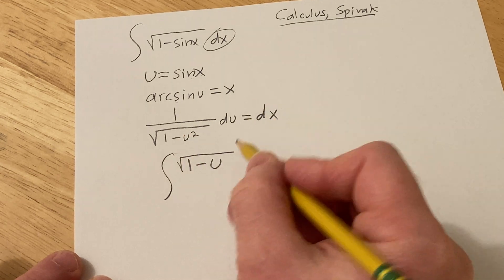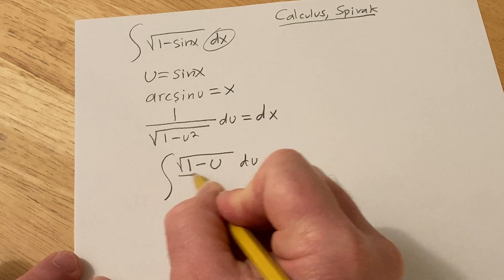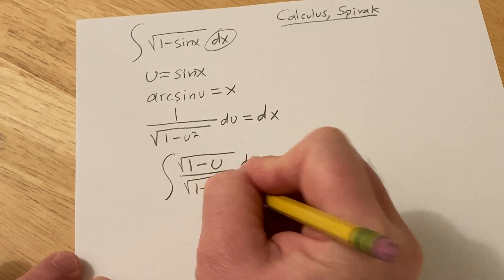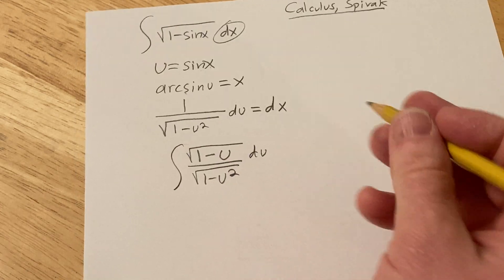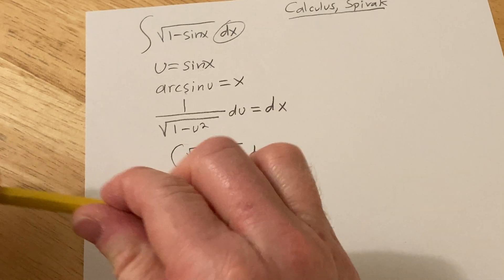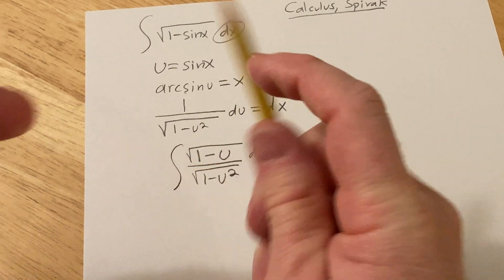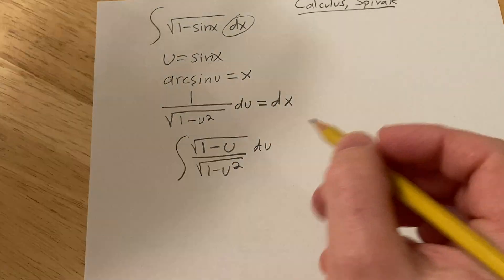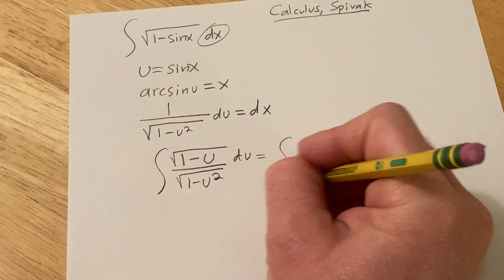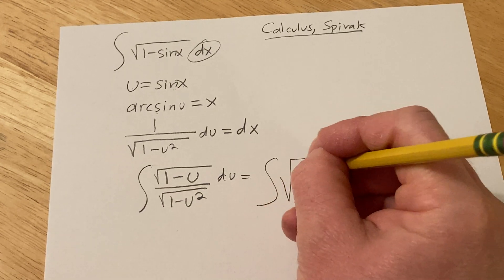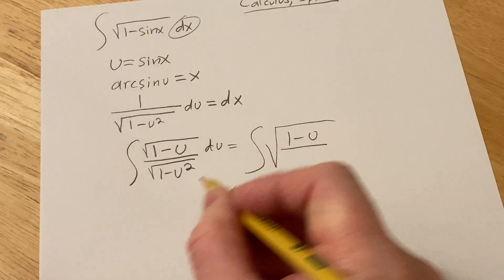so I'm just going to put it here. So du over square root 1 minus u squared. Okay, I should sharpen my pencil here for a moment while I think. So I think what we can try now is maybe writing this as a single square root. So this is going to be the integral of the square root of 1 minus u over, oh look,